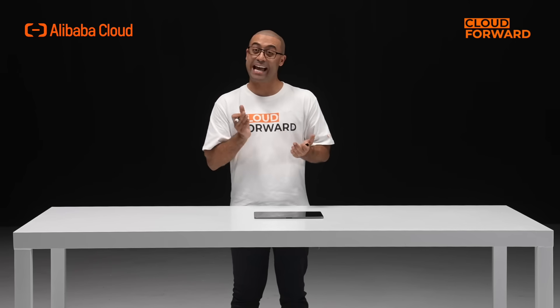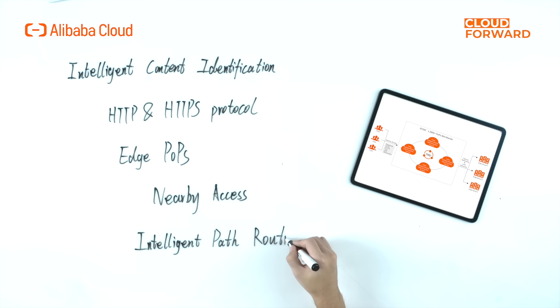Let me show you more details. First of all, DCDN can intelligently identify static and dynamic content and match the content with a tailored acceleration strategy accordingly. More specifically, static content will be cached on DCDN POPs worldwide so users from anywhere can access content from the POP nearest to their physical location, while requests for dynamic content will be redirected to the origin server via an optimal route computed by the intelligent routing system.